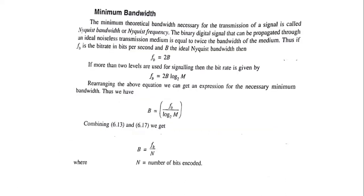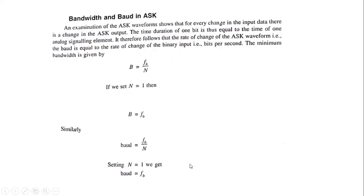When we talk about Nyquist bandwidth, we are talking about sampling. Where Fb is the bit rate in bits per second and B is the Nyquist bandwidth, Fb equals twice of B. In Nyquist criteria, Fb should be greater than or equal to 2B. Here we standardize it as equal so we can calculate the channel bandwidth and data being transmitted.